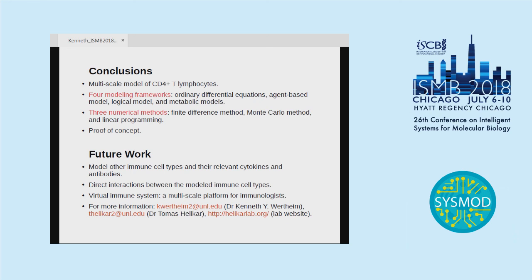Next question: how was the metabolic model made immune system specific — for example, is the set of active reactions or the biomass equation immune cell specific? We start with a base set of models called Recon3D or Recon2, published in Nature Biotech. We use that to switch genes on and off based on experimental data — genes which are present in different phenotypes — and from that we derive five different metabolic models.